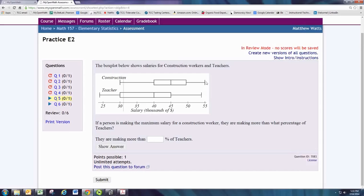Thus, the maximum salary for a construction worker is more than 100% of teachers, as 100% of teachers are contained within the left and right whiskers of the box and whisker plot for the teachers.